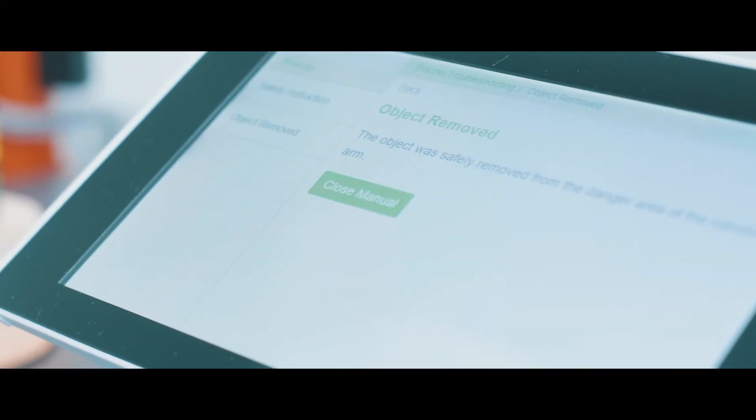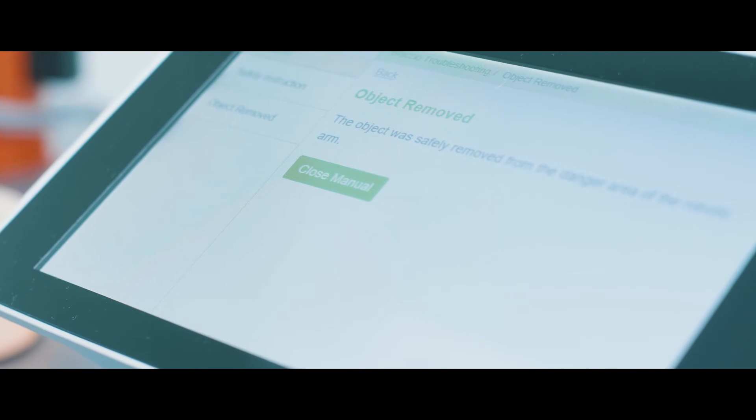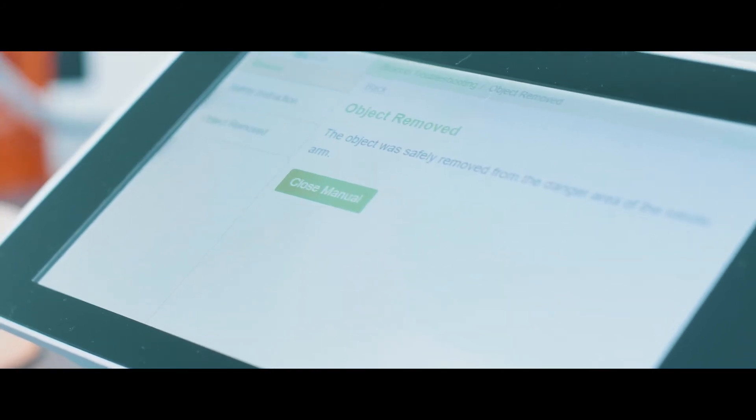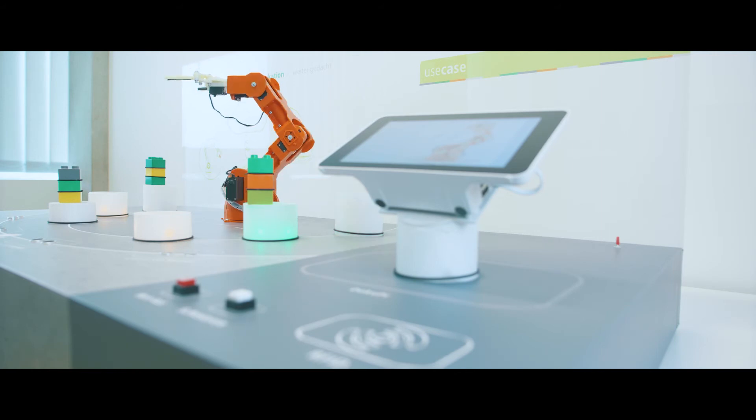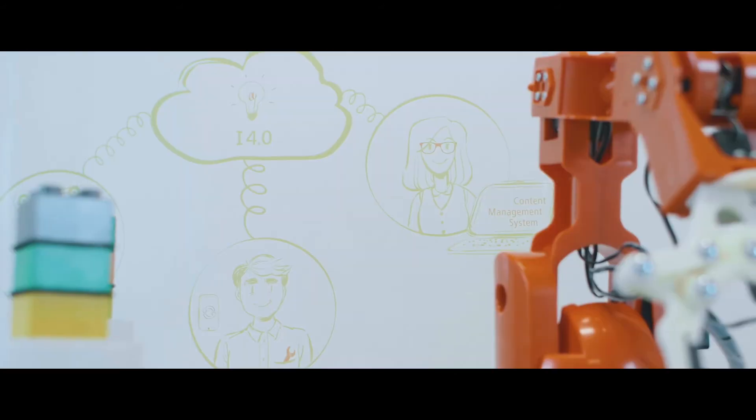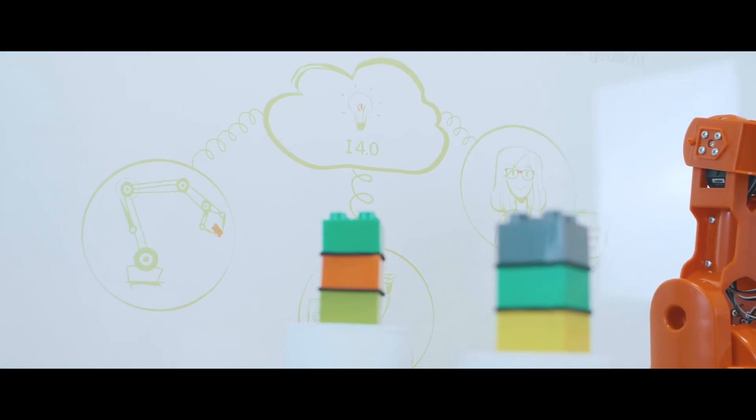The software on the tablet retrieves content from the digital documentation on the server. The information from the robot controls is sent at the same time to ensure that the information that comes back from the server is precisely the information that is needed.